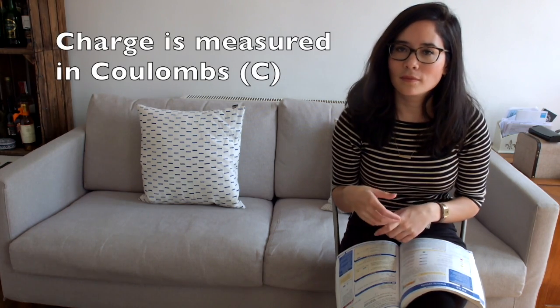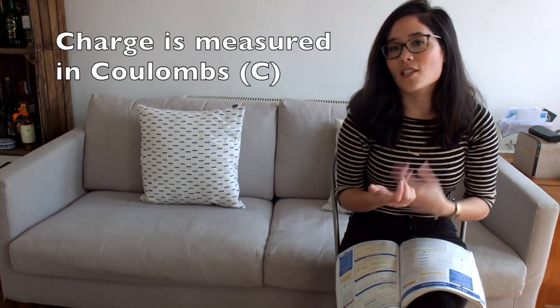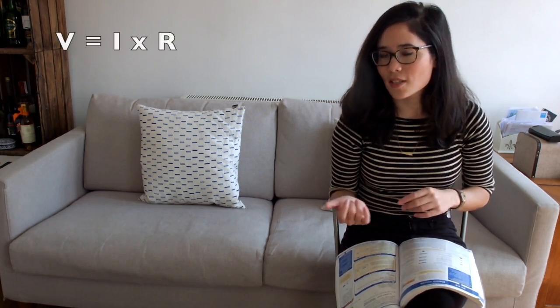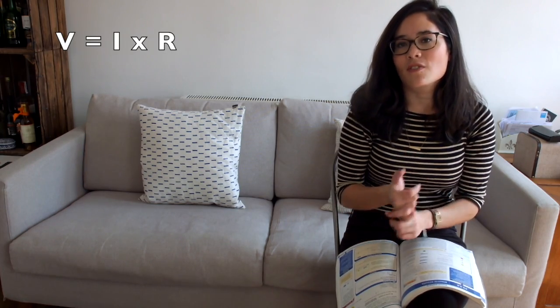Going back to units then: what is the unit of charge? That is coulombs. What is the unit of power? That is watts. What is the equation linking voltage, current, and resistance? Voltage is given by current times resistance. And now I've mentioned resistance, what is the unit for measuring resistance? That is the ohm.